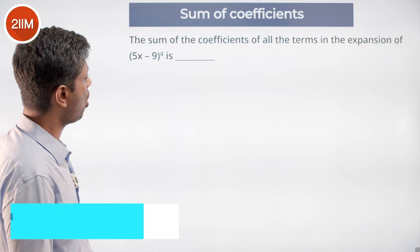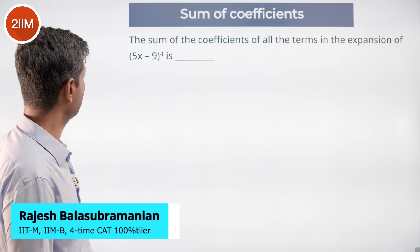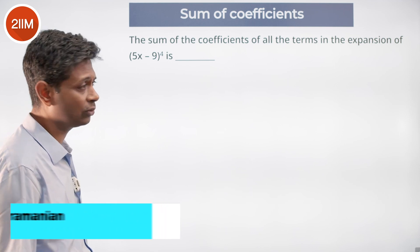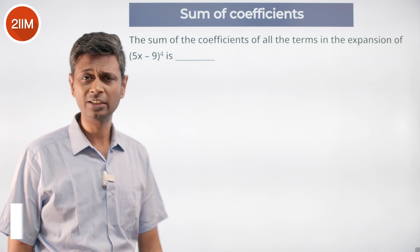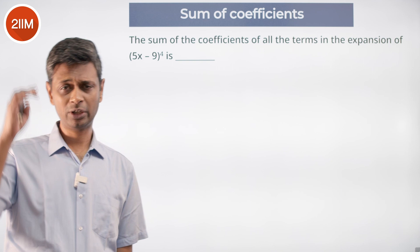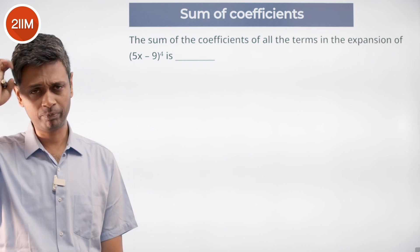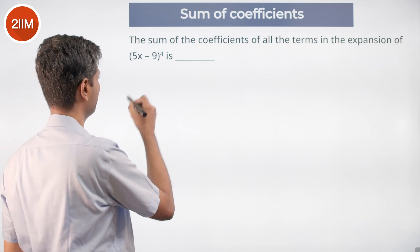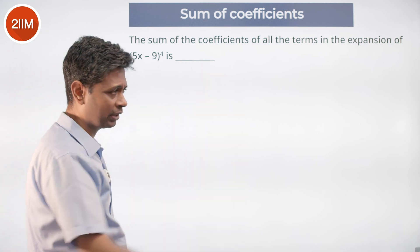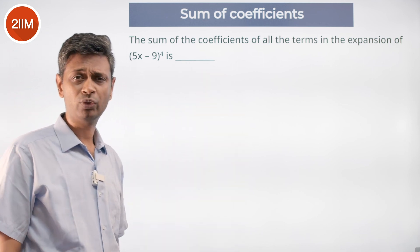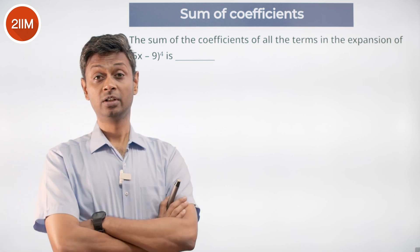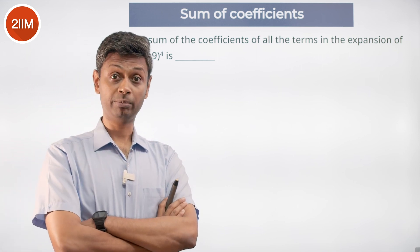The sum of coefficients of all the terms in the expansion of (5x minus 9) whole power 4. As we expand it, we figure out what needs to happen. We say: (5x minus 9) into (5x minus 9) into (5x minus 9) into (5x minus 9). Find it, multiply.